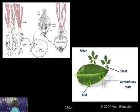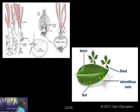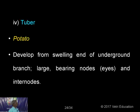This is an onion from which roots are produced, and with the help of adventitious buds, new plants come. The leaf is also able to vegetatively propagate — from the margin of the leaf, new young plants emerge, so the leaf also acts as a propagating organ. The tuber: best example is potato. Tubers are developed from the swelling end of an underground branch, large and bearing nodes called the eyes of the potato.